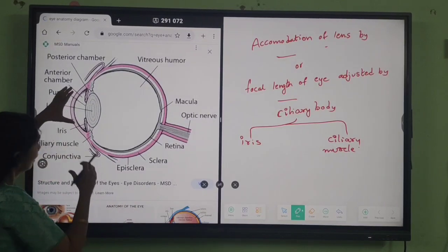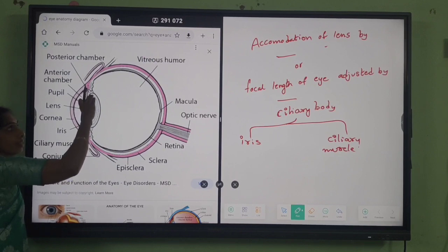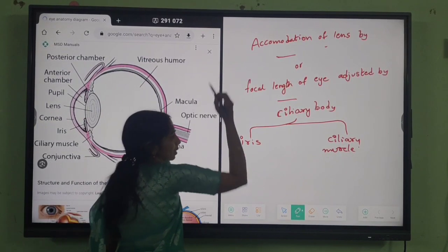What is accommodation? According to the convenience, lens is made wide, lens is made sharp. That is called accommodation.